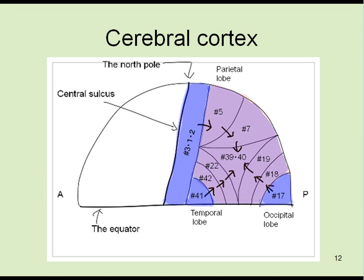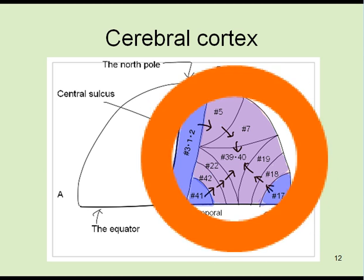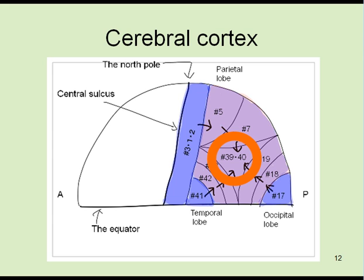Tracks of cognition start at area 3-1-2, 17 and 41. They run in association field of cerebral cortex toward area 39 and 40, which locates in between the three primary sensory cortices. After all, perceptive information come to have a meaning and become cognition at area 39 and 40.